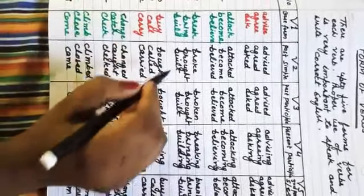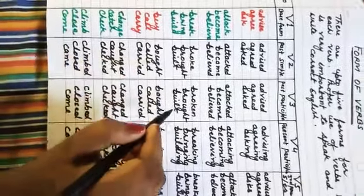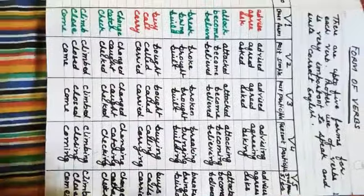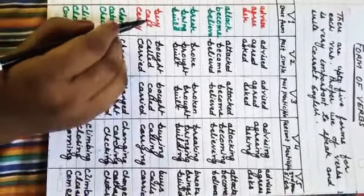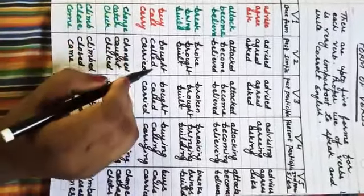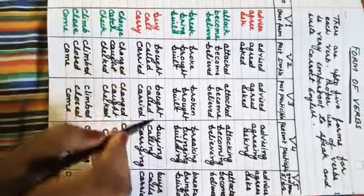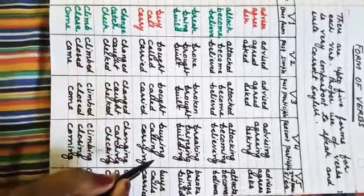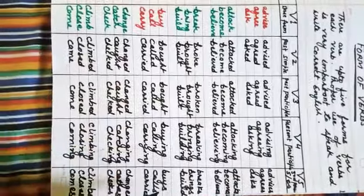Build — meaning 'banana' (to build). Second form: built. Third form: built. Fourth form: building. Fifth form: builds. Buy — meaning 'kharidna' (to buy). Second form: bought. Third form: bought. Fourth form: buying. Fifth form: buys.